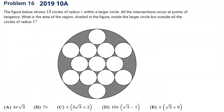The next question comes from 2019 10a. We already know each small circle has area pi, and there are 13 of them, so 13 pi total. We just need to find the radius of the large circle.